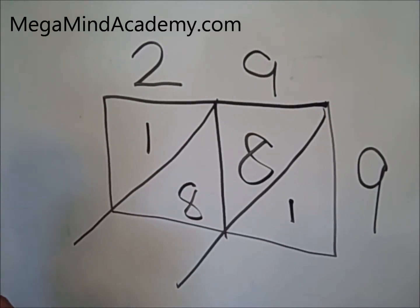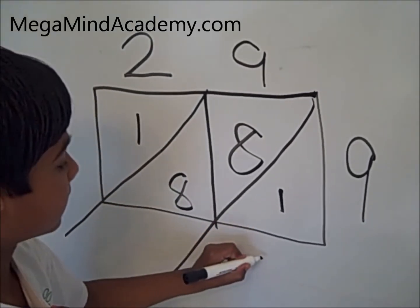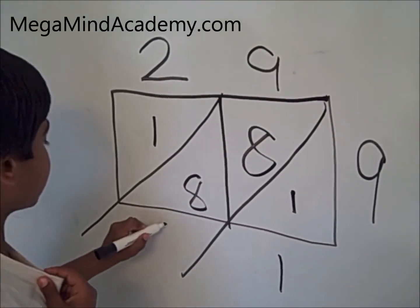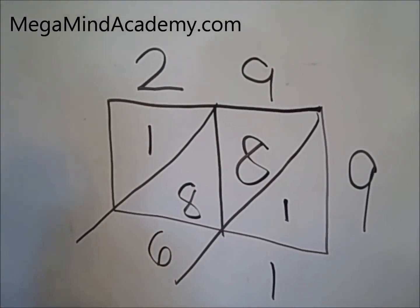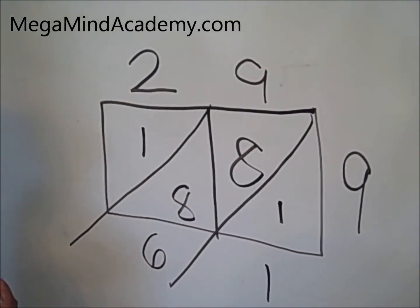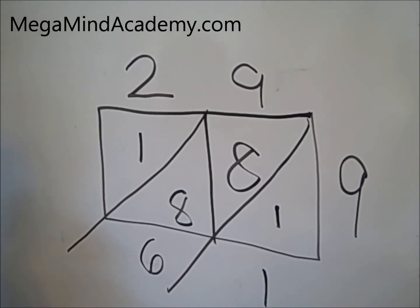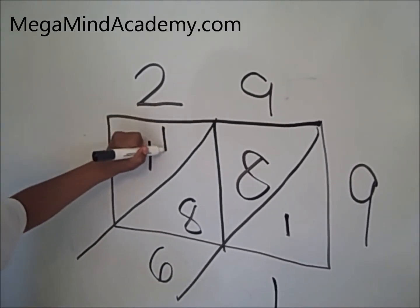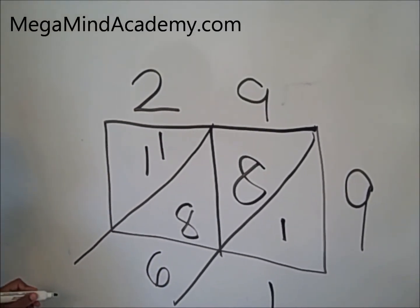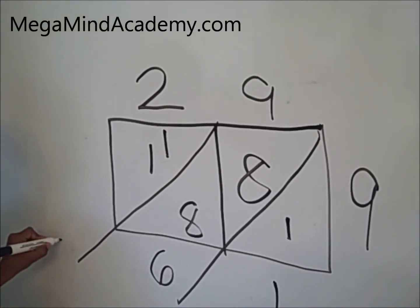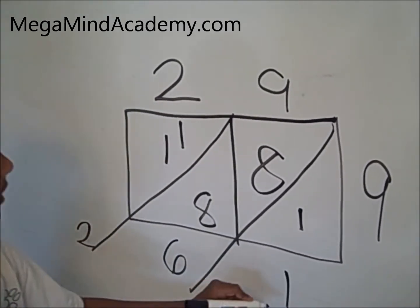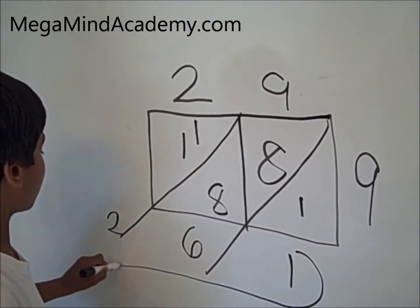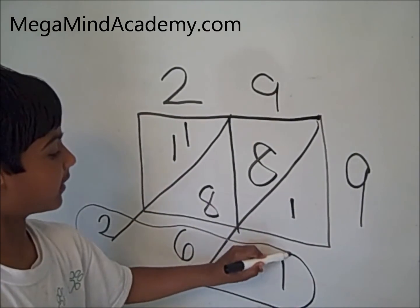Now we need to add it up. 1 plus 0 is 1. 8 plus 8 is 16. Since 16 has two digits, we need to carry the tens place to the next column. 1 plus 1 is 2. The answer of 29 times 9 is 261.